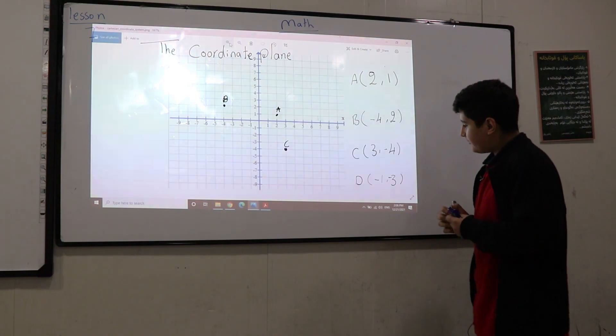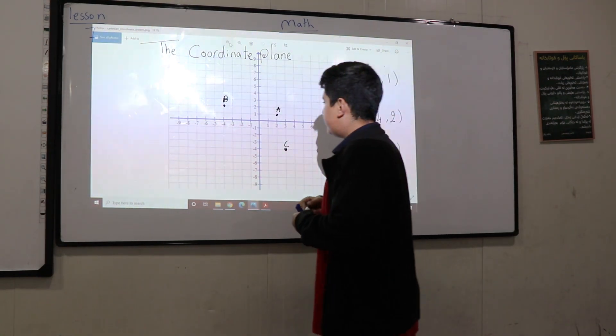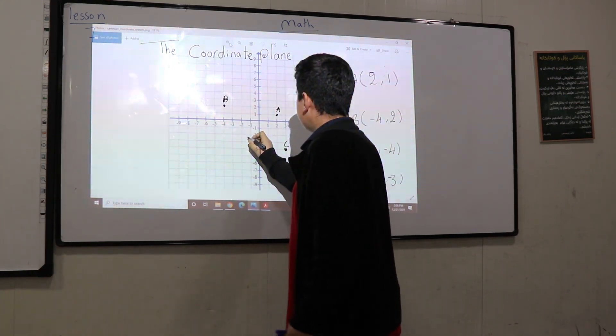And we have D, negative 1 and negative 3. So this is D.